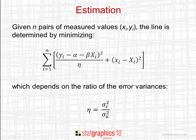There's a trade-off between the deviations in the X and Y direction, which depends on the ratio of the error variances, eta, written here as sigma squared of epsilon divided by sigma squared of u.